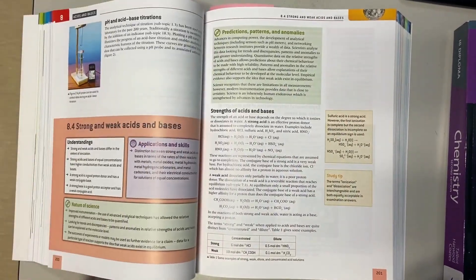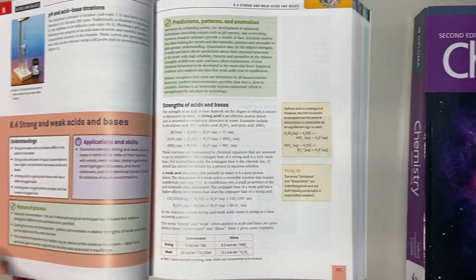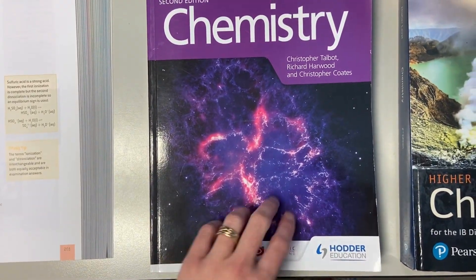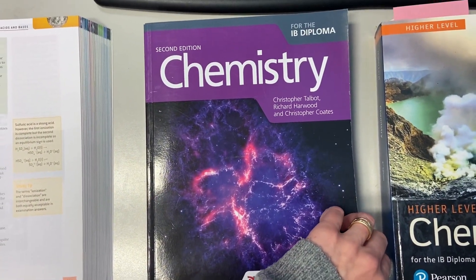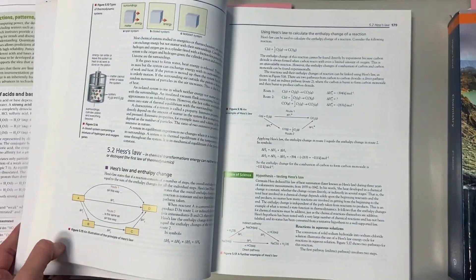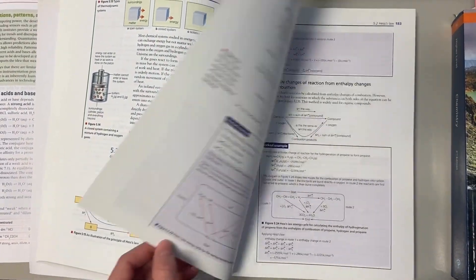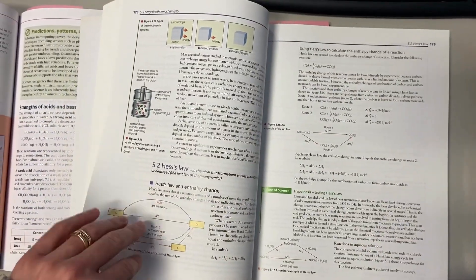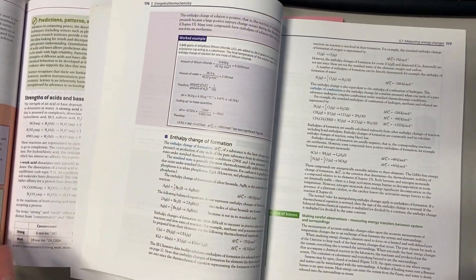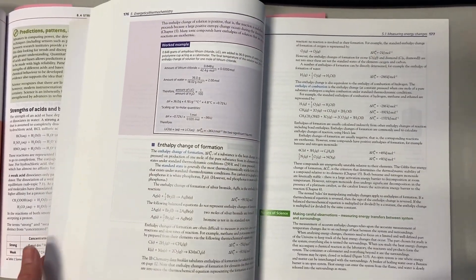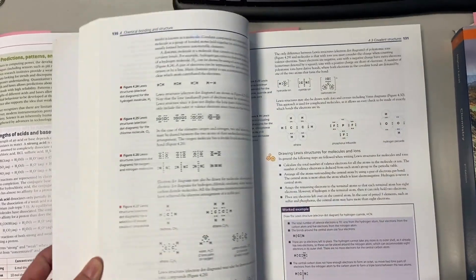The Hodder textbook is by far the worst textbook that I've seen. To me it's set up like a college textbook. There's not a lot of pictures, there's not a lot of practice questions, and the same thing with the Oxford textbook - the SL and HL content is split up, which is just annoying if you're an HL student.